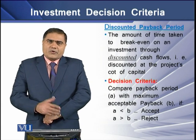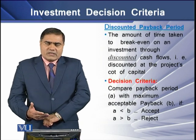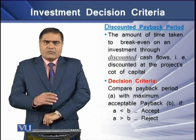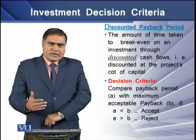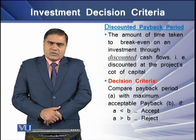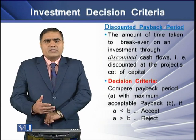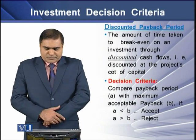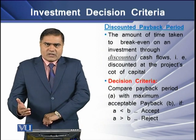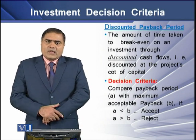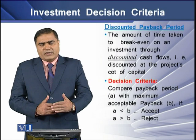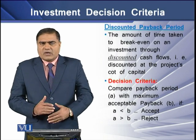To avoid the drawbacks of payback period, there is a refined version called the discounted payback period. It works similarly to the payback period, with the difference that instead of using gross cash inflows, it uses the present value of those cash inflows. The acceptance criteria is the same: if the computed payback period is less than the required payback period, the project can be accepted; otherwise not.